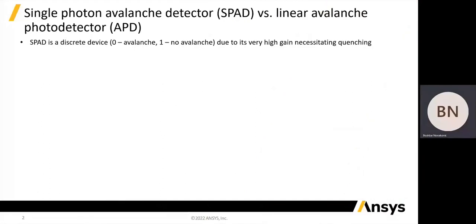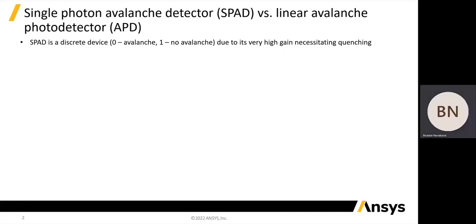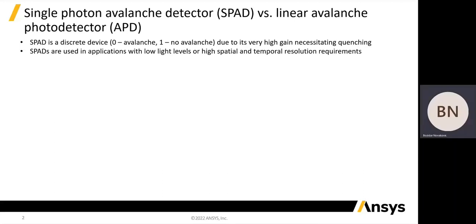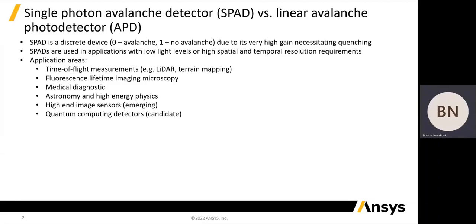The main difference between normal avalanche photodetectors and SPADs is that SPADs are discrete devices with two states: avalanche or no avalanche. This is a consequence of very high gain that causes a runaway avalanche that has to be quenched before the next photon can be detected. SPADs are used in applications that have very low light levels or that require high spatial and temporal resolution. Standard application areas are time-of-flight measurements for LiDAR and terrain mapping, fluorescence lifetime imaging spectroscopy, medical imaging, astronomy, and high energy physics. One interesting emerging area is high-end image sensors, while SPADs are also considered as candidates for detectors in quantum computing.